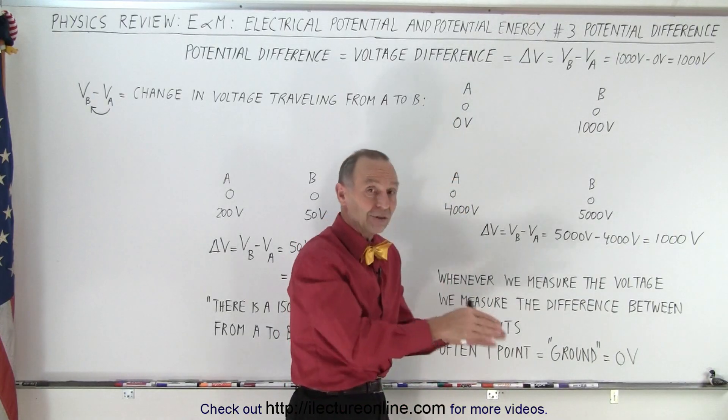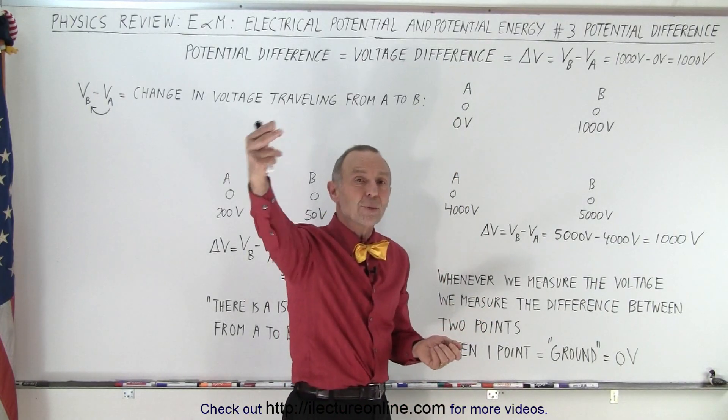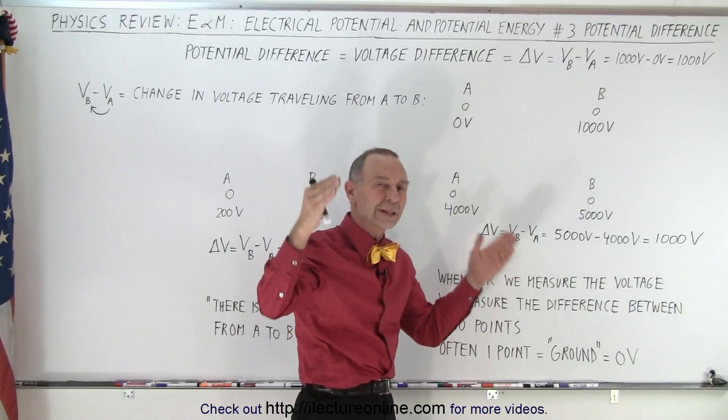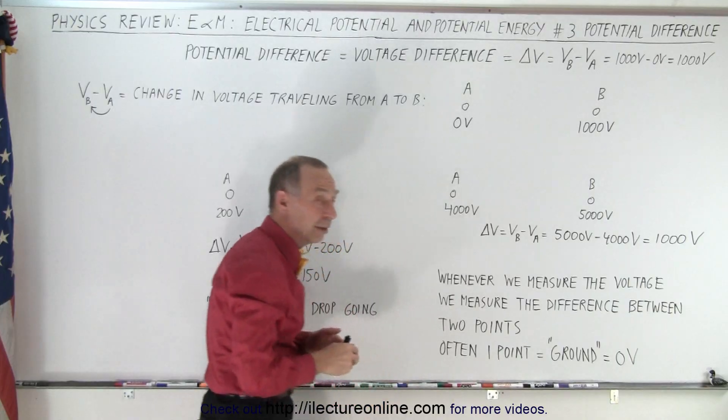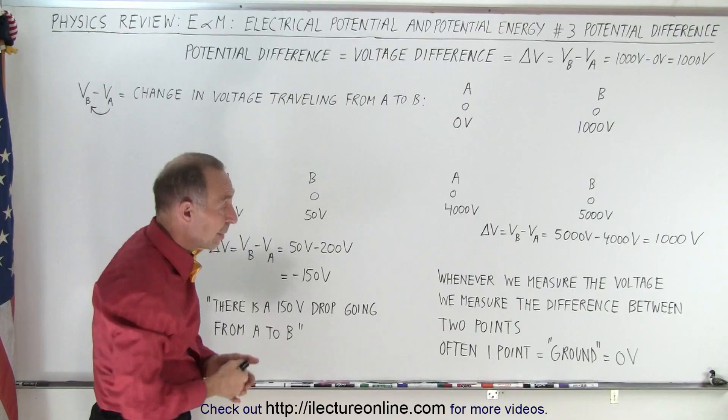So if that's the ground, if that's zero volts, then we measure some other point relative to that zero volts and that will give us the potential difference between ground and the point that we're measuring.